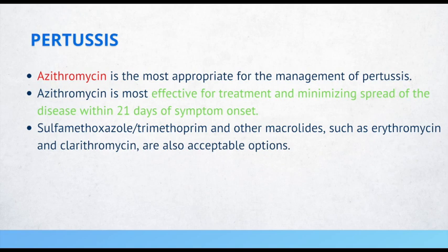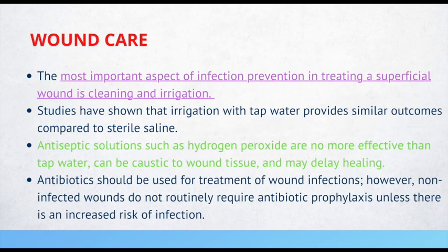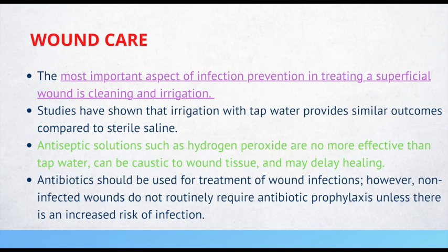Wound care: the most important aspect of infection prevention in treating a superficial wound is cleaning and irrigation. Studies have shown that irrigation with tap water provides similar outcomes compared to sterile saline. Antiseptic solutions such as hydrogen peroxide are not more effective than tap water, can be caustic to wound tissue, and may delay healing — this is very high yield. Antibiotics should be used for treatment of wound infections; however, non-infected wounds do not routinely require antibiotic prophylaxis unless there is an increased risk of infection. Risk factors for wound infection include bite wounds and delayed presentation.